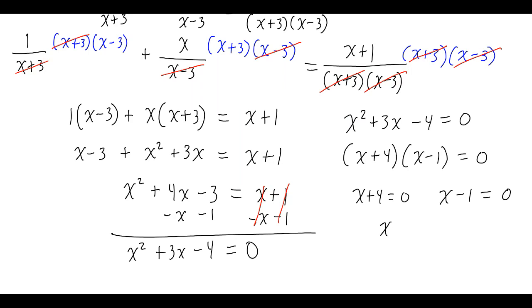So x equals negative 4 and x equals 1. Negative 4 and 1 are the two solutions to this equation.